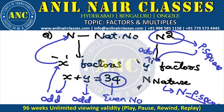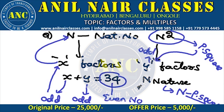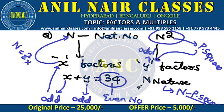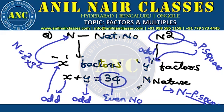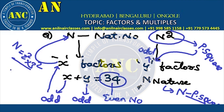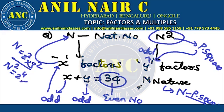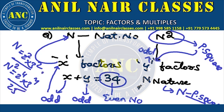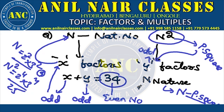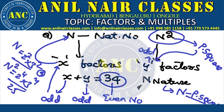One such number is 2² × 3², which is a perfect square. If I square it, I get 2^4 × 3^4. Factors of 2^4 × 3^4: (4+1)(4+1) = 5 × 5 = 25. Factors of 2² × 3²: (2+1)(2+1) = 3 × 3 = 9. And 25 + 9 = 34. This confirms x + y = 34.